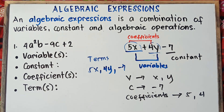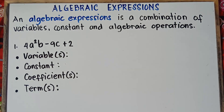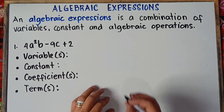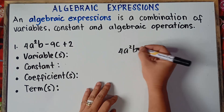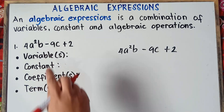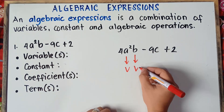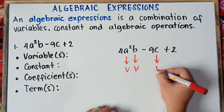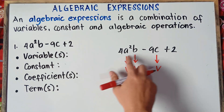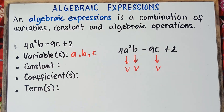Alright, so let's have example number 1. Our given algebraic expression is 4a squared b minus 9c plus 2. Let's identify the variables, constant, coefficients, and terms. Variables are the letters: a, b, and c.